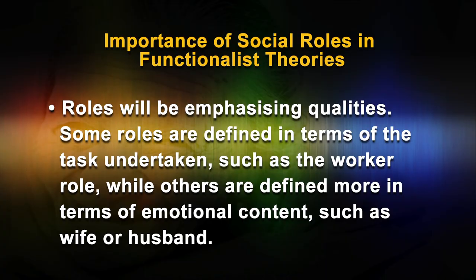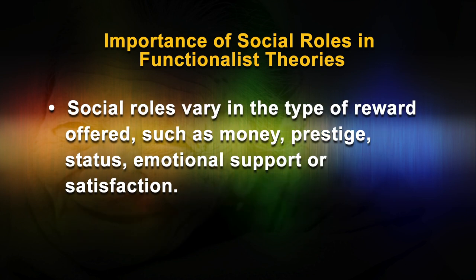In the broadest sense, competing social roles differ in three main ways. First, roles will emphasize different qualities — some roles are defined in terms of the task undertaken, such as the worker role, while others are defined more in terms of emotional content, such as wife or husband. Second, social roles vary in the type of reward offered, such as money, prestige, status, emotional support, or satisfaction. Third, roles are evaluated according to the values of the society.